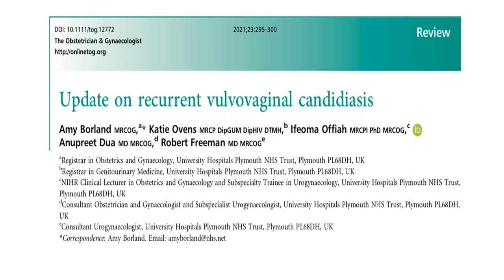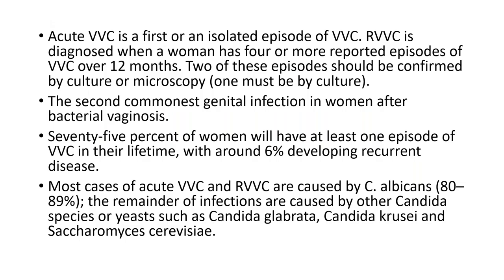Starting with the update on recurrent vulvovaginal candidiasis. An isolated episode is acute vulvovaginal candidiasis. But when a woman has four or more repeated episodes over a period of 12 months, that is recurrent. So remember the word four — four or more reported episodes over a 12-month period. At least two of these episodes should be confirmed by culture or microscopy, and at least one should be confirmed by culture.